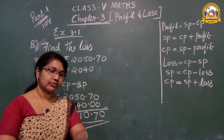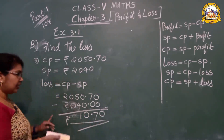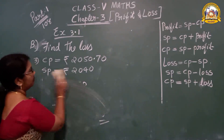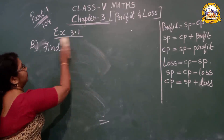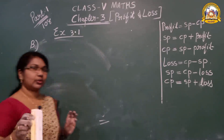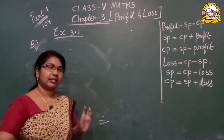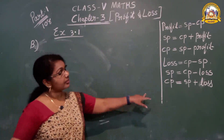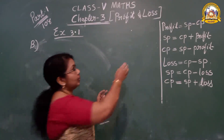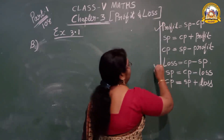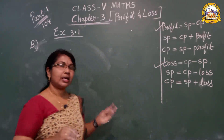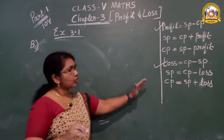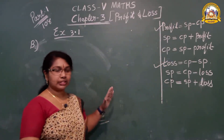I will show you one more question. The remaining questions you can do using the formula. Today we learned two formulas: profit formula and loss formula. Profit formula: SP minus CP. Loss formula: CP minus SP.